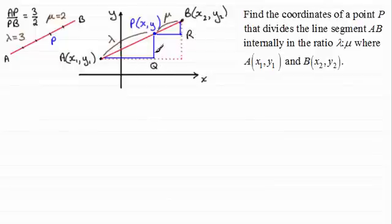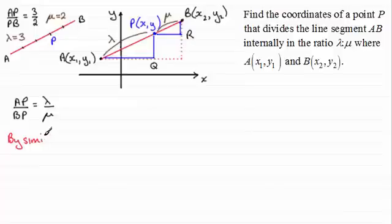And so because the triangles APQ and PBR are similar, then the sides will be in the ratio lambda to mu. And so since AP when we compare it to BP, that ratio is lambda to mu, and by similar triangles, what we have are similar ratios for the other sides.